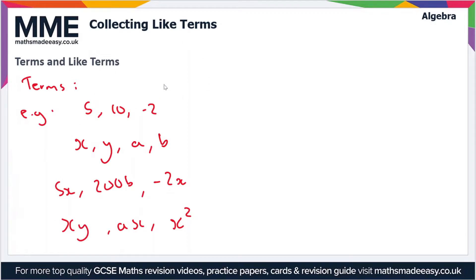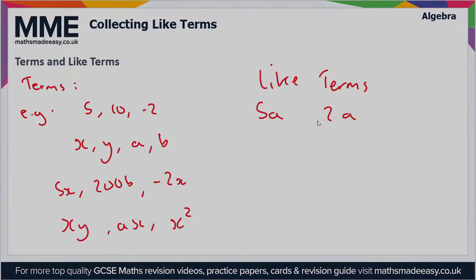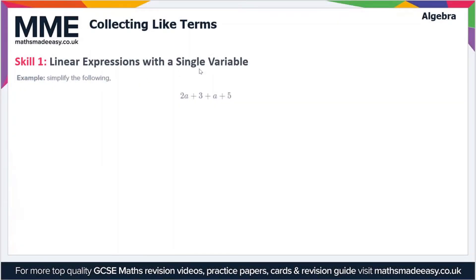But like terms then, like terms are where we have two of the same combination of letter. So for instance, if we have 5a and 2a, these are like terms because they are both terms in a. So in other words, they are some combination of a number times a.